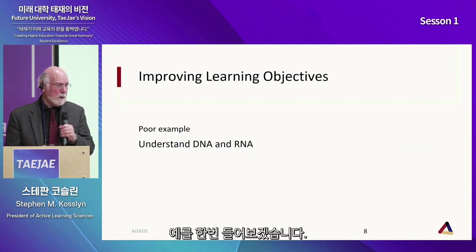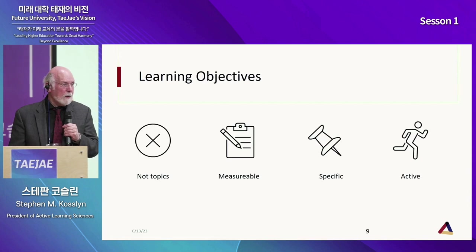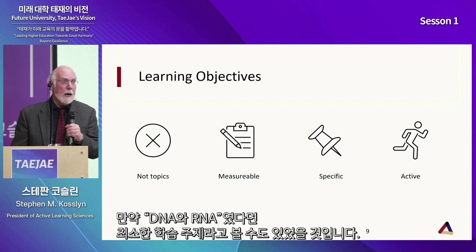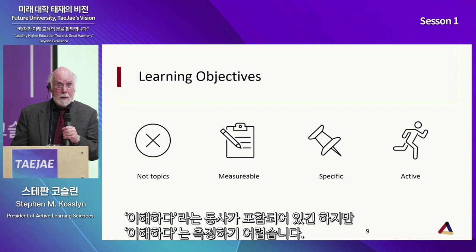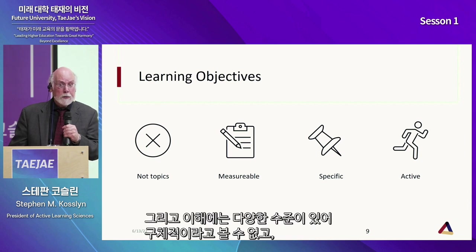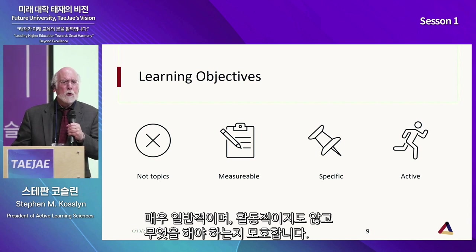Here's an example of a poor learning objective: 'Understand DNA and RNA.' It's not just a topic — at least it has a verb — but the verb 'understand' is very difficult to measure. There are levels of understanding. It's not specific, it's general, it's not active, and it's not clear what to do.